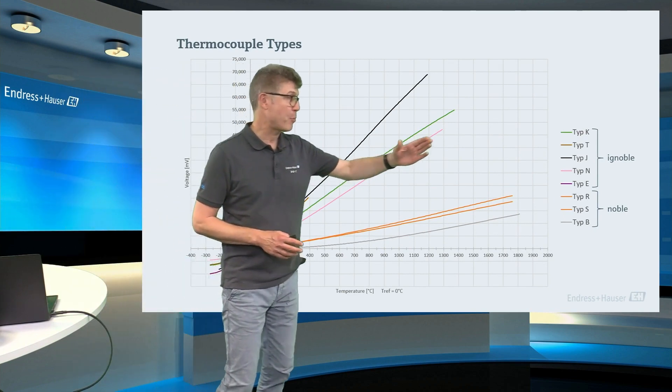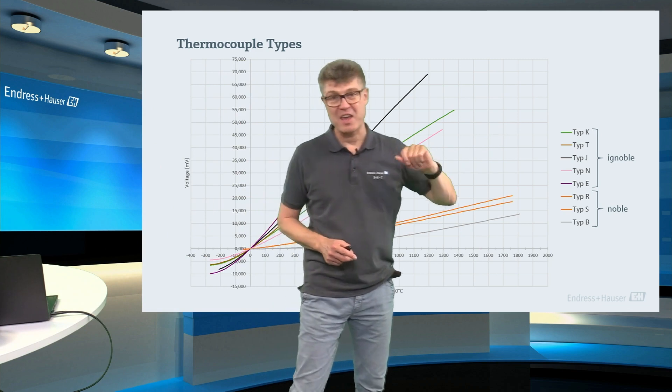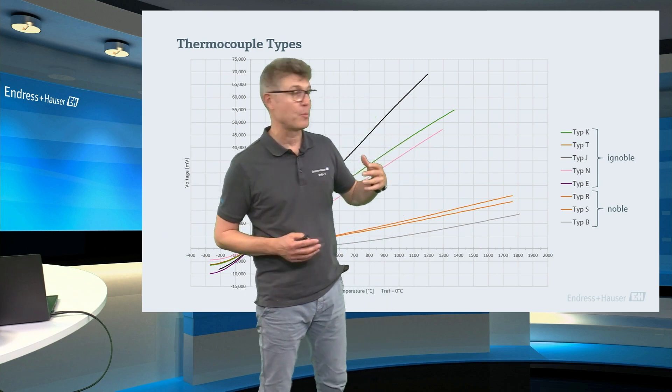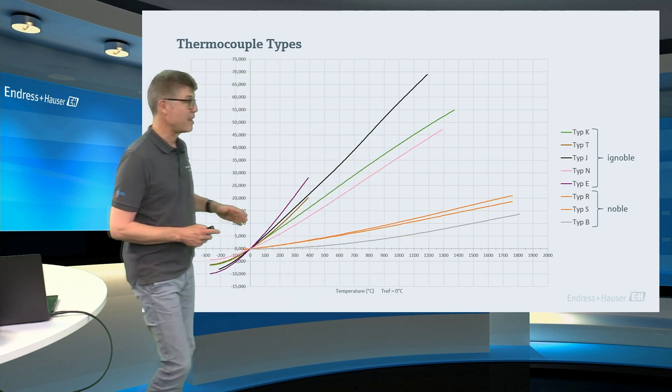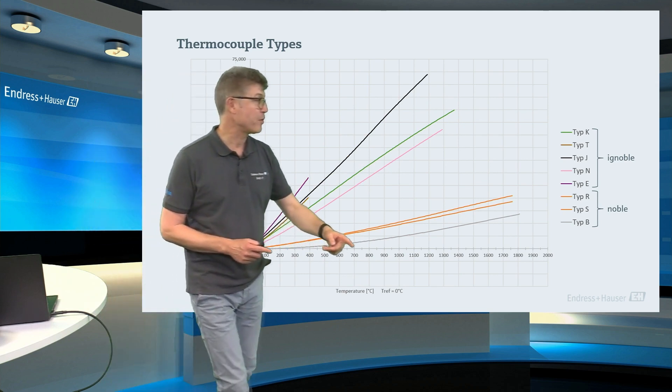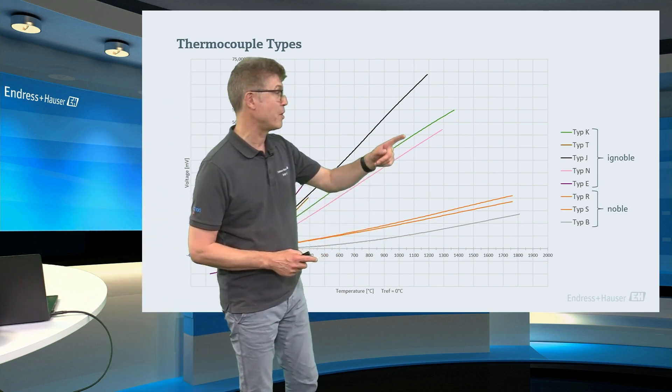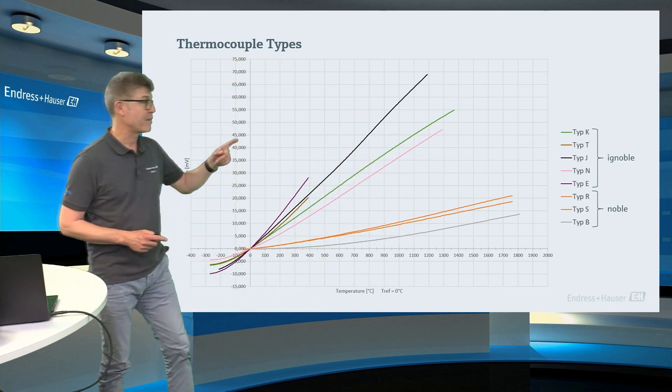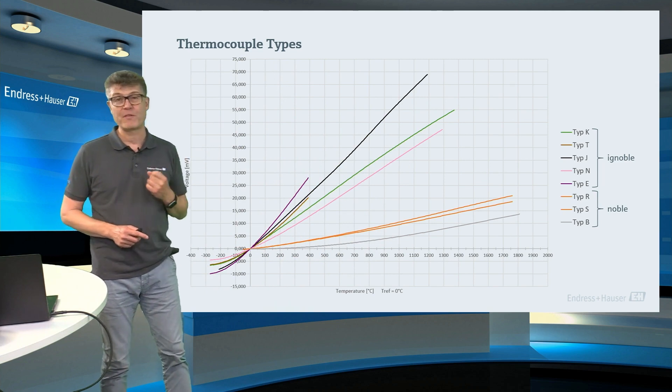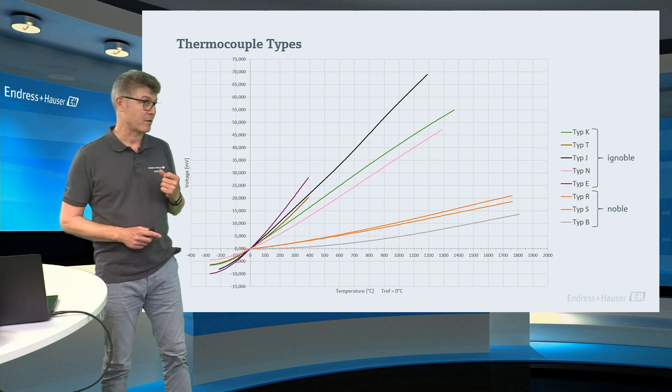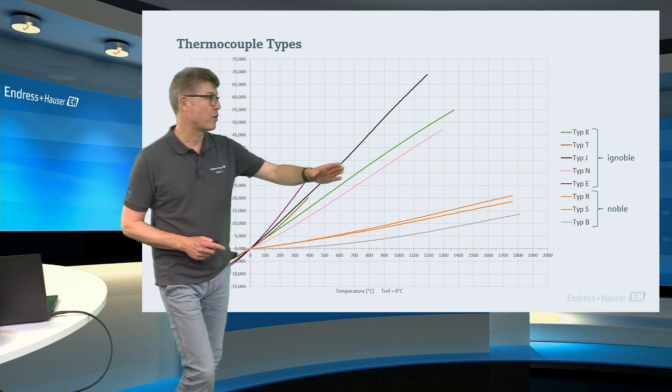The most popular one is called type K, which is nickel-chrome-nickel. And you see here, at 1000 degrees of temperature difference, we will have a signal of 45 millivolts. And, yeah, this looks quite linear.